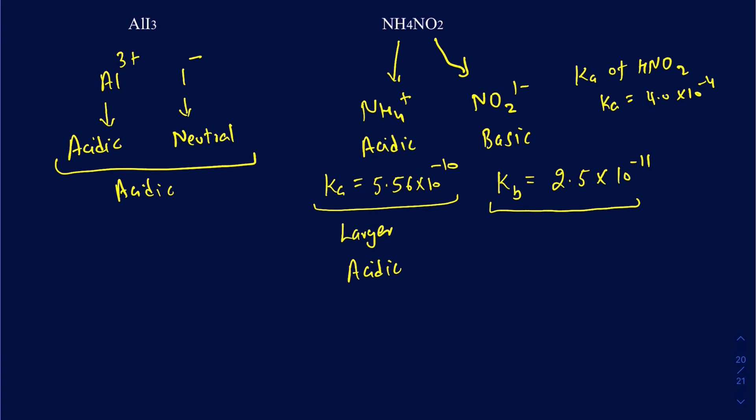This is how you determine the acidity of a solution by looking at the cations and anions separately. If you have any questions on any of those, feel free to leave comments in the section below.